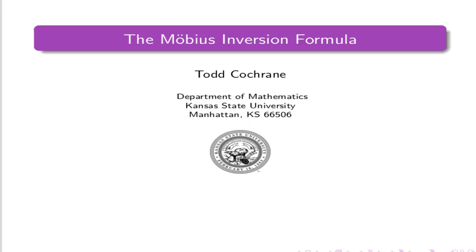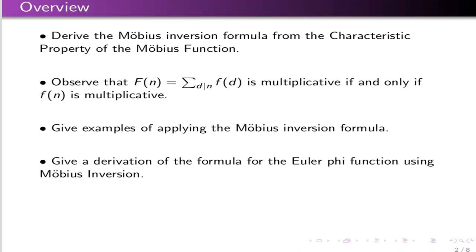In this section, I want to take a look at the Möbius inversion formula. We'll first derive it starting from the characteristic property of the Möbius function we saw last time — the property where you sum over the divisors of n of the Möbius function, which always comes out to 0 unless n equals 1. We'll observe that a function capital F of this form, where you sum over the divisors of n of a given function little f, is multiplicative if and only if little f is multiplicative. We'll give a couple examples, and then finally give a new derivation of the Euler phi function formula using Möbius inversion.